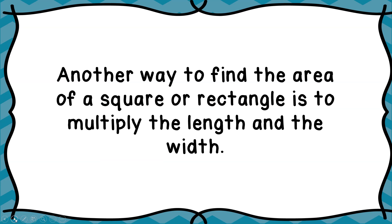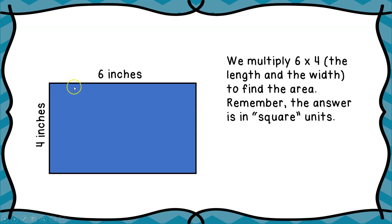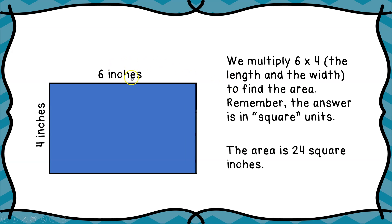Another way to find the area of a square or rectangle is to multiply the length and the width — and this only works if you have a square or a rectangle. We have this rectangle here, and the measurements are six inches long and four inches wide. We multiply six times four, which is the length and the width, to find the area. We have to give the answer in square units, so the area is twenty-four square inches.